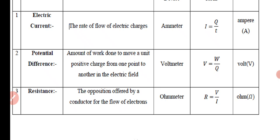Resistance: the opposition offered by a conductor for the flow of electrons. Resistance is measured by ohmmeter. Formula: R = V/I (voltage divided by current). SI unit is ohm.